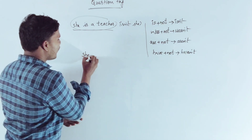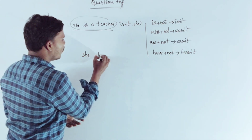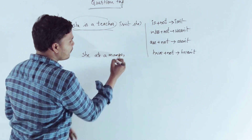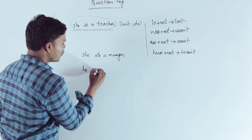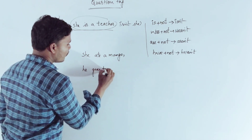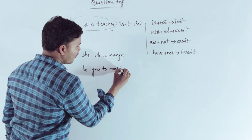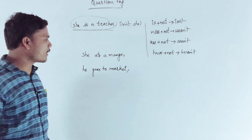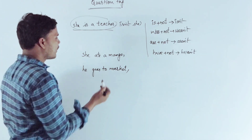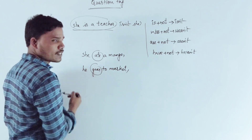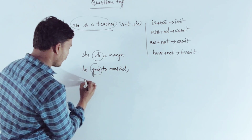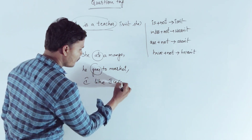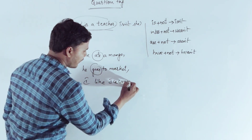Let's look at some examples: 'She ate a mango.' 'He goes to market.' 'I like ice cream.' These are the sentences we will use to form question tags.